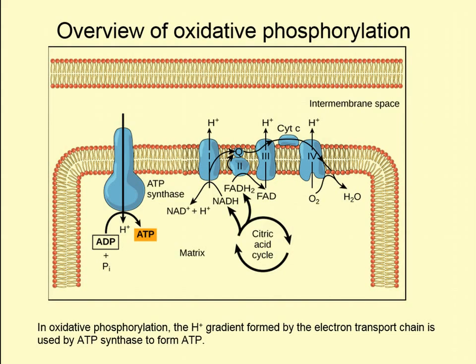Here you can see the two processes coupled together. The citric acid cycle — an eight-step cycle — keeps generating high-energy electron carriers. Those carriers deliver protons and high-energy electrons to the electron transport chain, which uses the energy in those electrons to pump protons into the intermembrane space. The protons then flow back downhill through ATP synthase, providing the energy to turn ADP into ATP. This process is called oxidative phosphorylation.